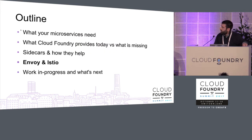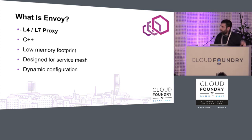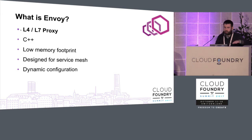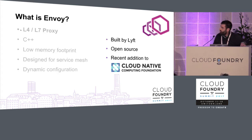That little logo you've been seeing inside the proxies is Envoy. Envoy is a layer 4 / layer 7 proxy written in C++ with a very low memory footprint, making it appropriate for deploying one in every application instance. It's designed for the service mesh model with extremely dynamic configuration — you can completely reconfigure Envoy without restarting it. The project was built by Lyft, is open source, and is a recent addition to the Cloud Native Computing Foundation.